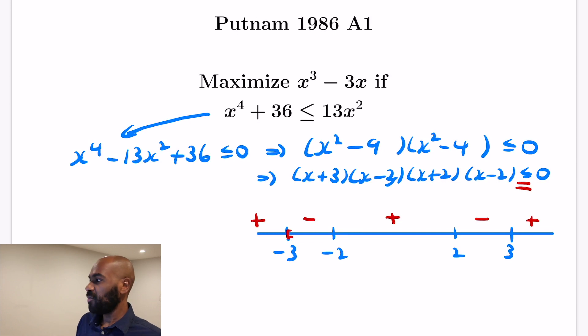So the values where this inequality holds are where the function is negative or 0, which happens in these two highlighted intervals right over here. So we can replace this complicated fourth degree inequality with saying that we're maximizing x³ - 3x in the union of two intervals when x is between -3 and -2 and when x is between 2 and 3.